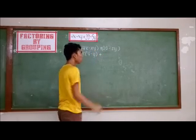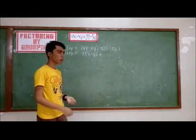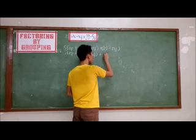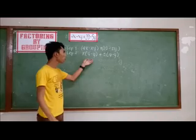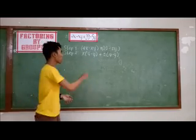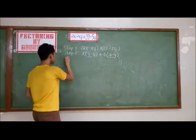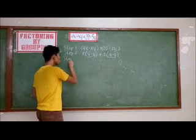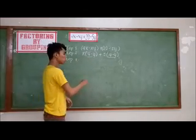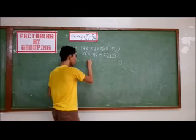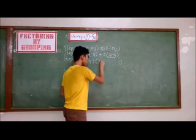In the second group, we have 20 minus 5y. Since they are both divisible by 5, we can factor out 5 and it will become 5 times 4 minus y. As we can see, 4 minus y appears in both groups. This means that 4 minus y is the GCF of this expression. So step 3 is to write the expression as a product of the GCF and the remaining factor. The GCF is 4 minus y and the remaining factor is x plus 5.